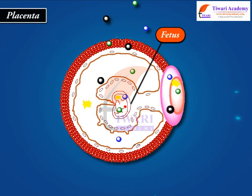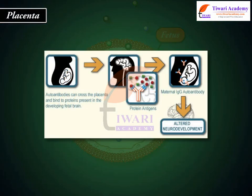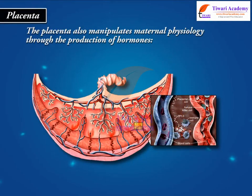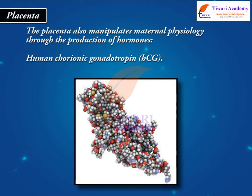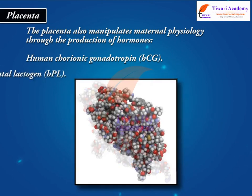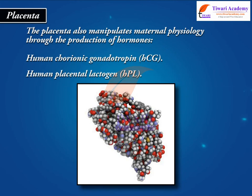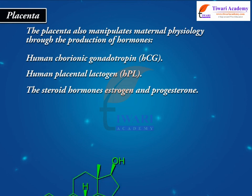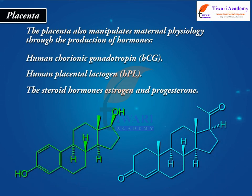The placenta also protects the fetus from the maternal immune system. Additionally, it manipulates maternal physiology through the production of hormones: human chorionic gonadotropin (HCG), human placental lactogen (HPL), as well as the steroid hormones estrogen and progesterone.